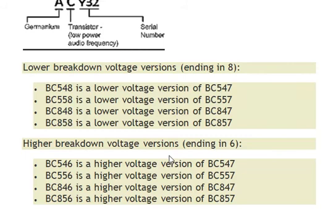'B' in BC represents silicon, 'C' represents lower or higher voltage, and numbers like 547 and 548 are serial numbers used for transistors. This is my video about BC and 547. If you have any doubt, please ask in the comment section. Please subscribe to my YouTube channel for more videos. Thank you, friends.